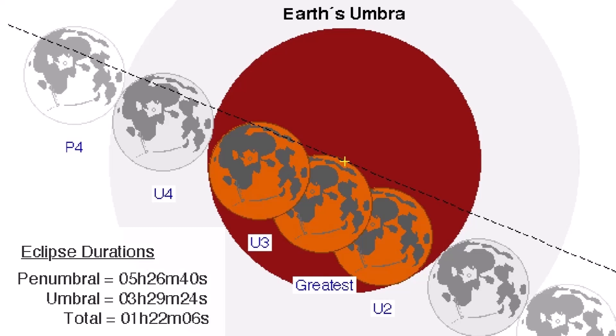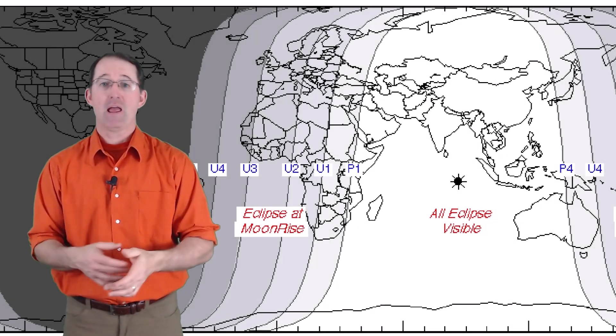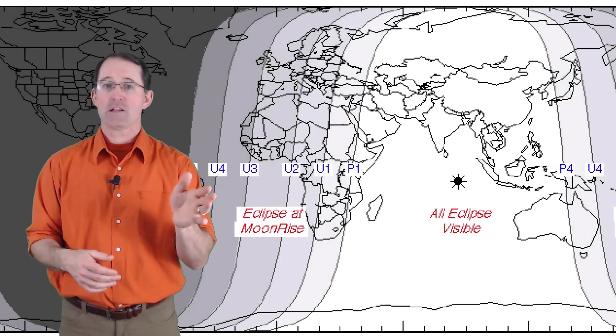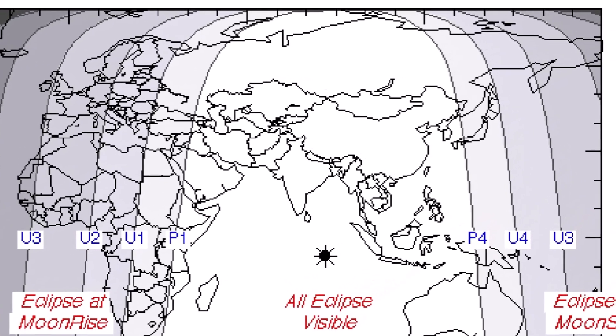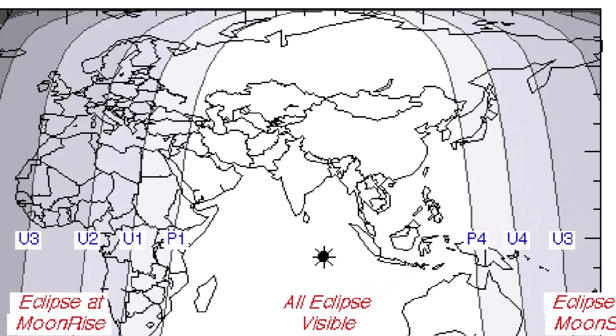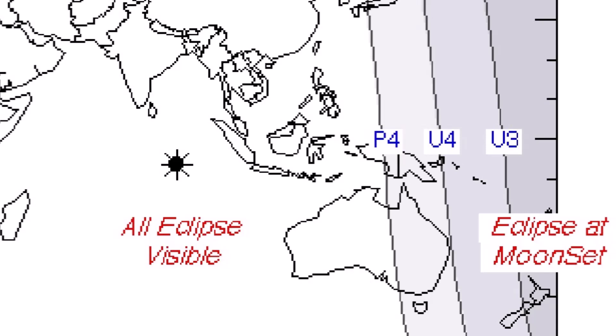The big difference between the two events is obviously the location, and they couldn't be more different. Asia is where the eclipse peaks near midnight. Far Eastern Africa will experience the lunar eclipse just after the moon rises in the evening, and Australia will get the eclipse just before sunrise in the morning.